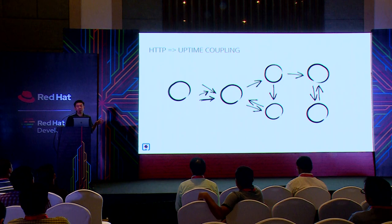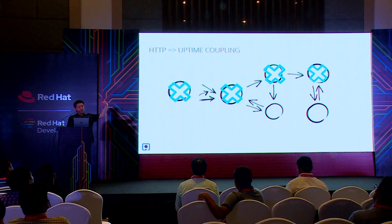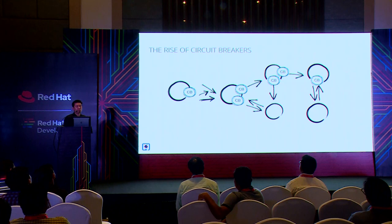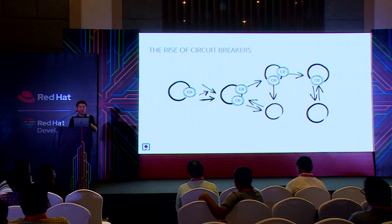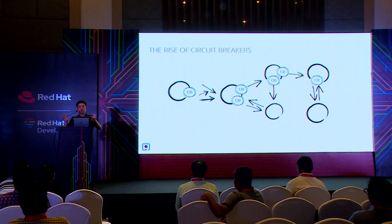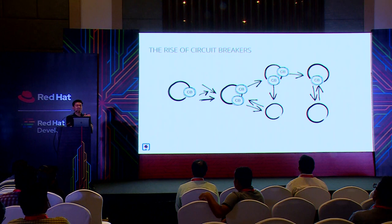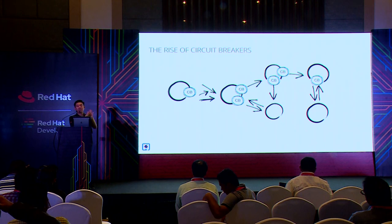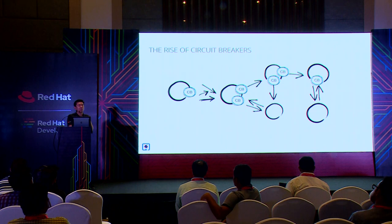To solve problems like cascading failures — where one endpoint brings the entire system down — we implement strategies like circuit breaking. But circuit breaking works differently depending on context. For Netflix, a fallback returning a default recommendations list is perfectly fine. For enterprise information systems, the business model is very complex with lots of data correlation, and it's much harder to provide meaningful fallbacks.